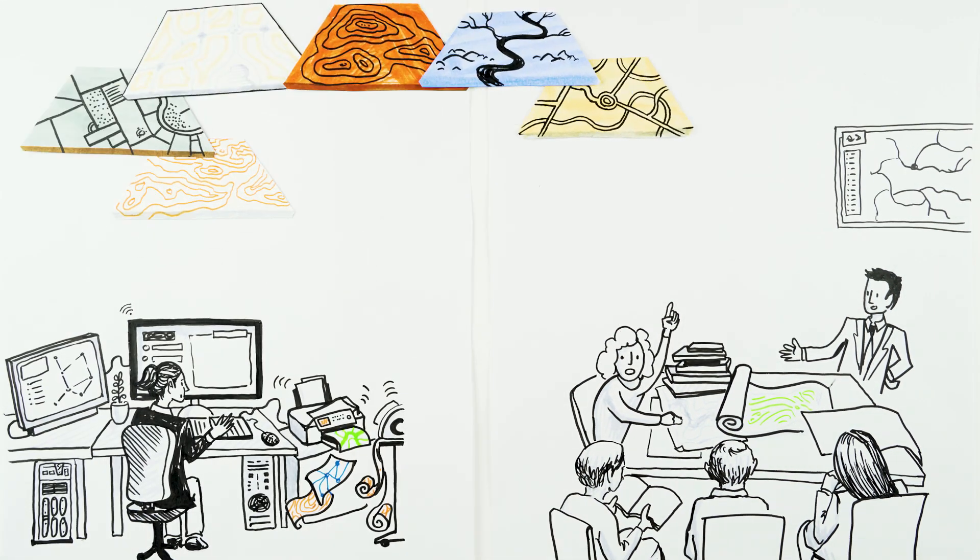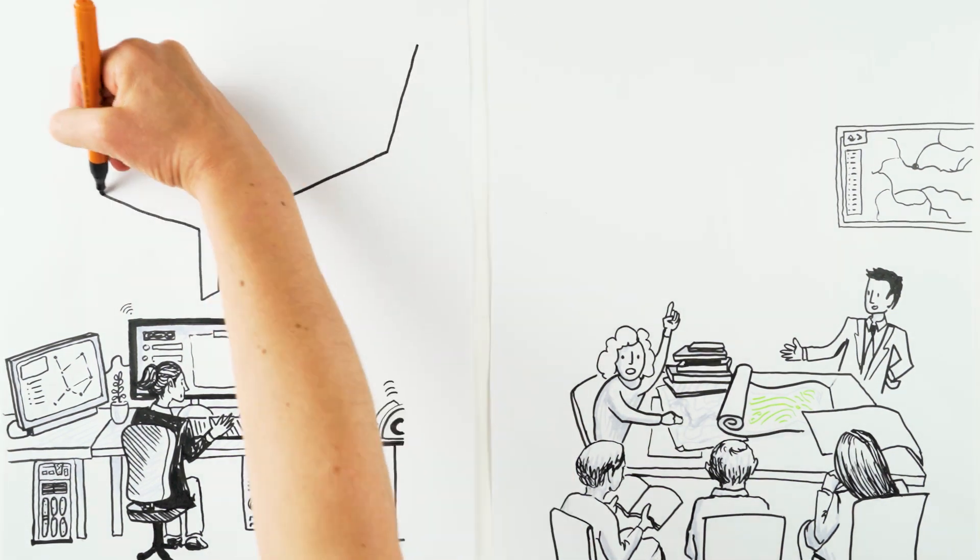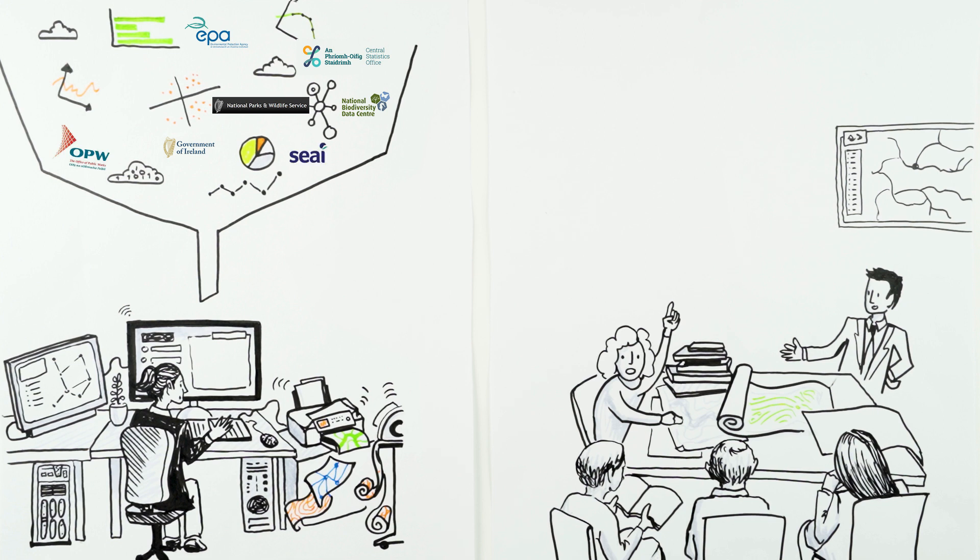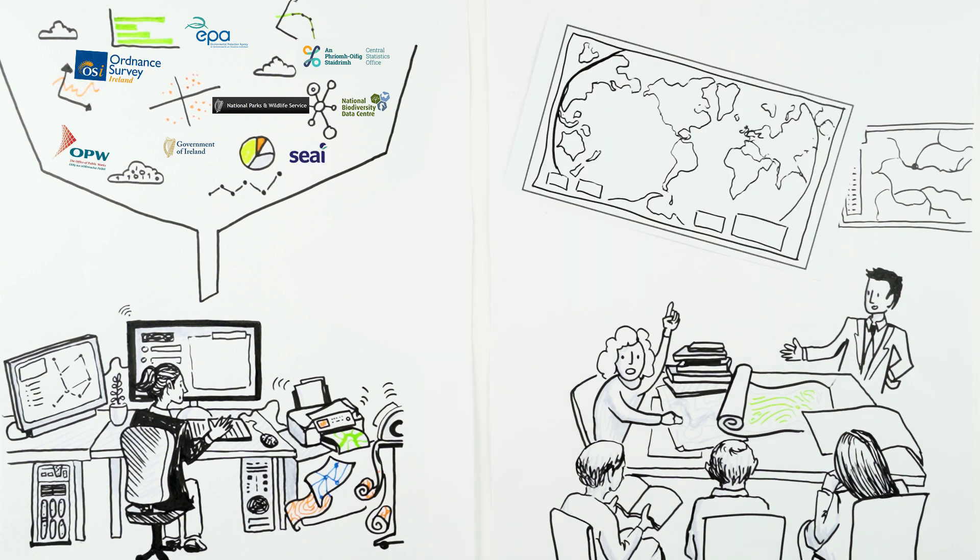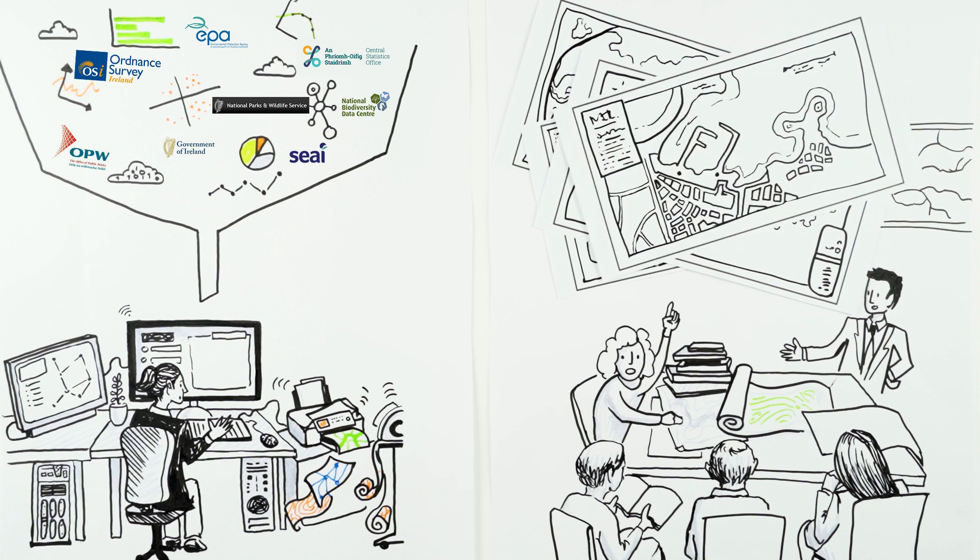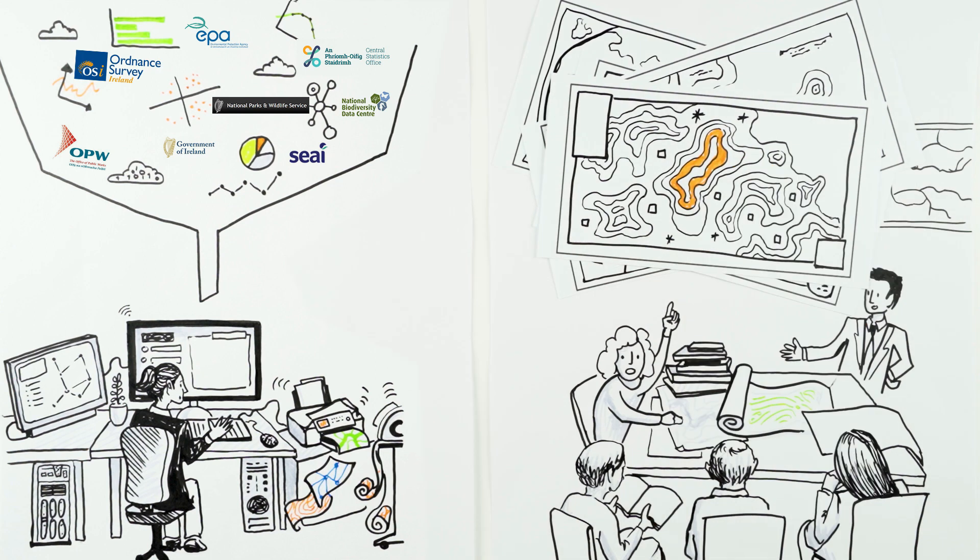Good environmental data are key to this. GIS can be used to pull together multiple spatial datasets into a series of maps, giving plan makers a better picture of how and where the environment might be impacted by a plan, as well as informing the scope of SEA.